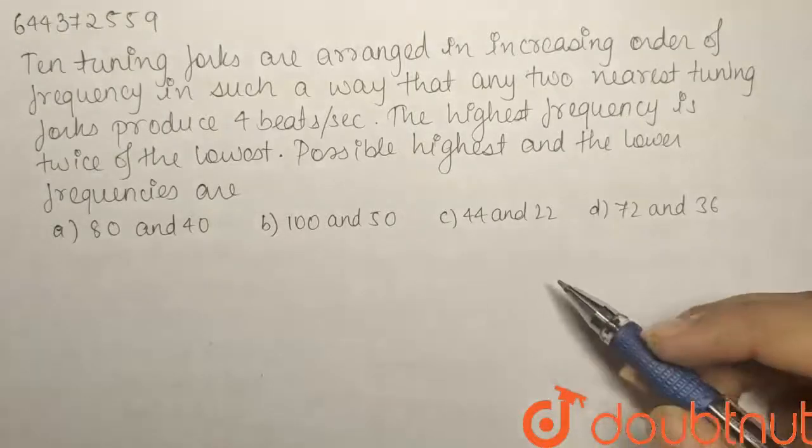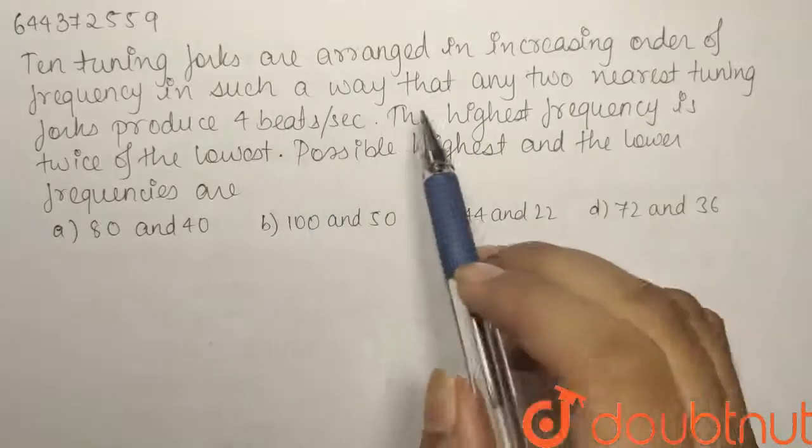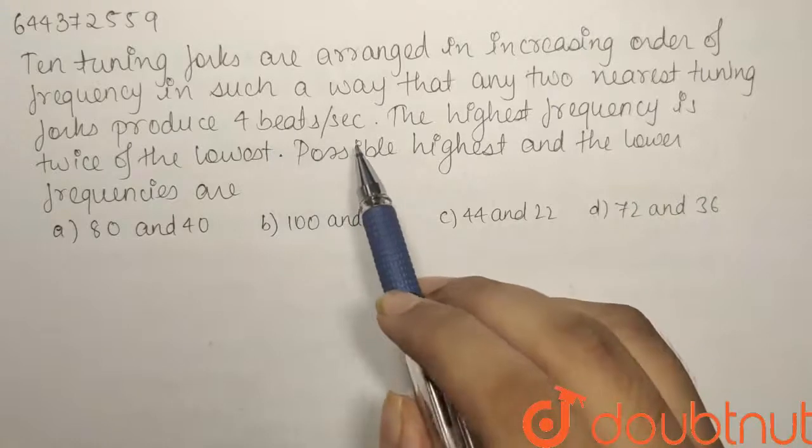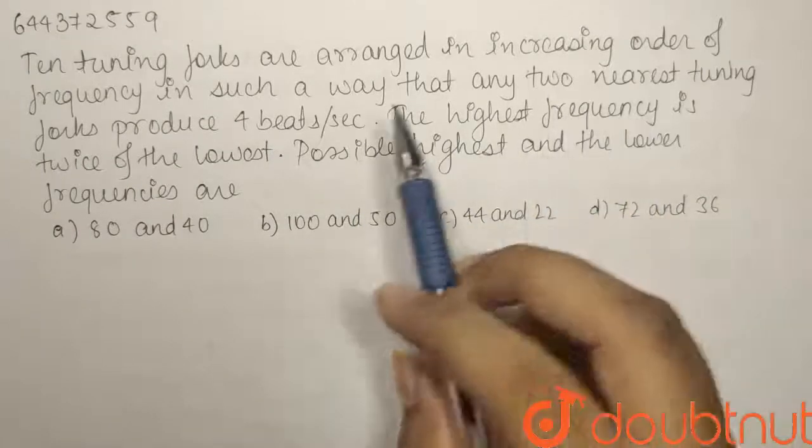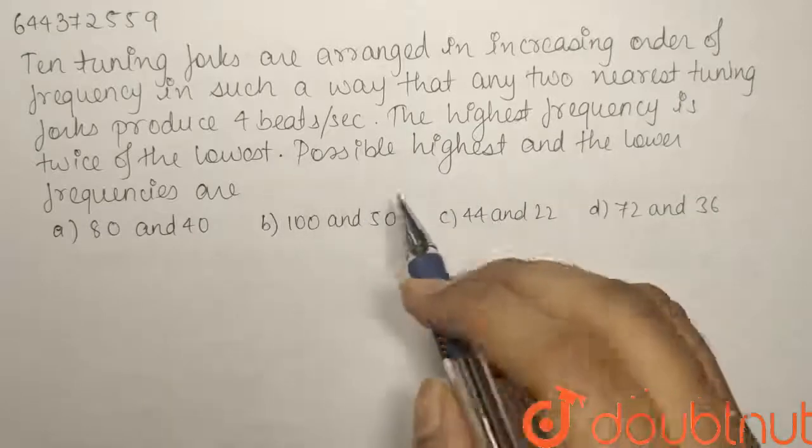We have a question from the chapter waves. Ten tuning forks are arranged in increasing order of the frequency in such a way that any two nearest tuning forks produce 4 beats per second. The highest frequency is twice that of the lowest. The possible highest and the lower frequencies are?